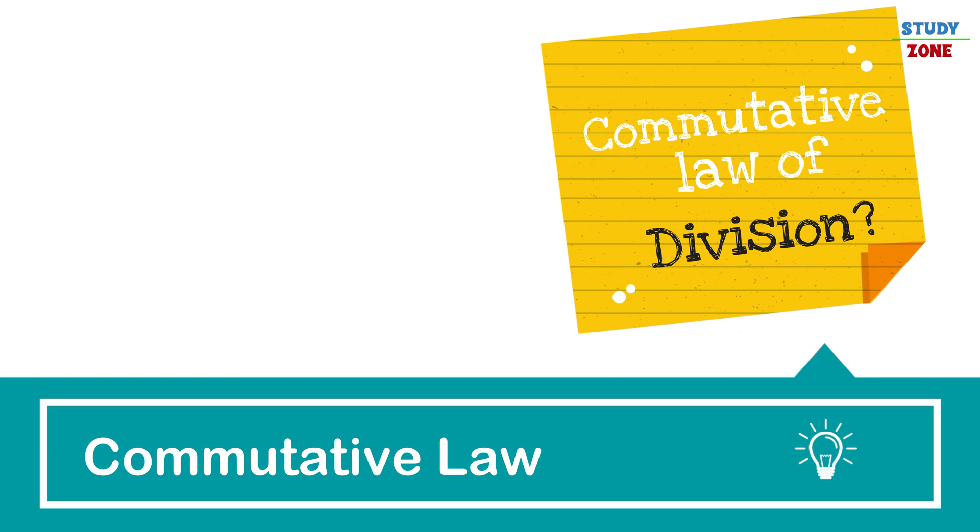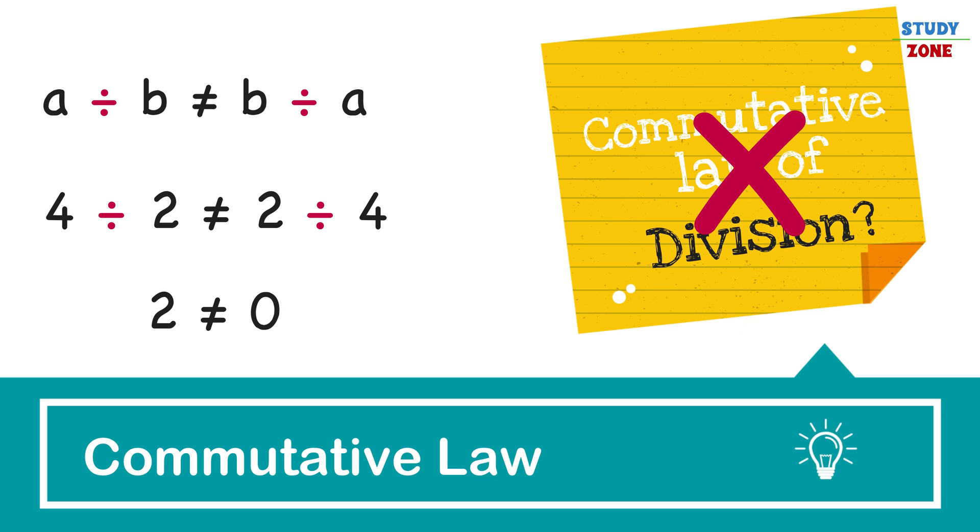Let us now see if this law holds true for division as well. No, it's not. Dividing a by b and b by a will not produce the same output always. For example, dividing 4 by 2 will result in 2, whereas dividing 2 by 4 gives 0.5 as the end result.